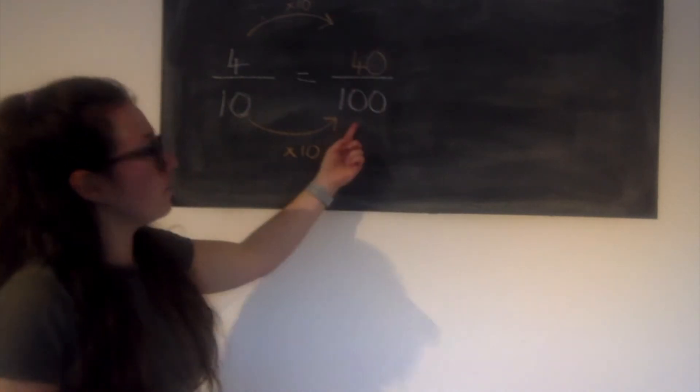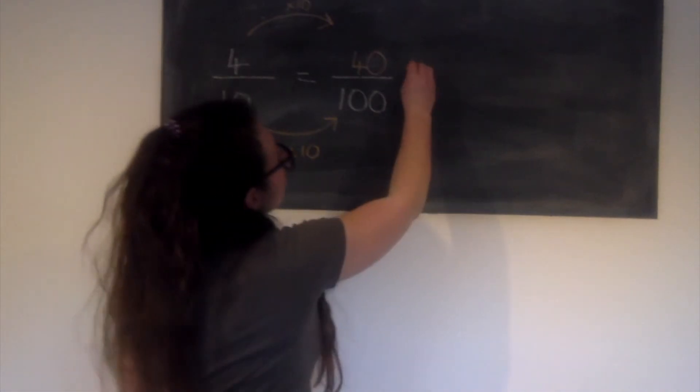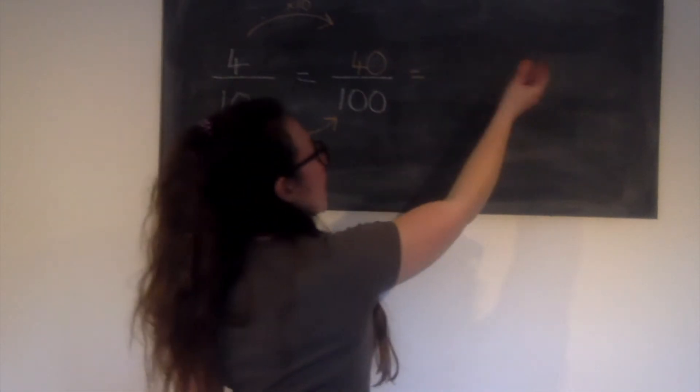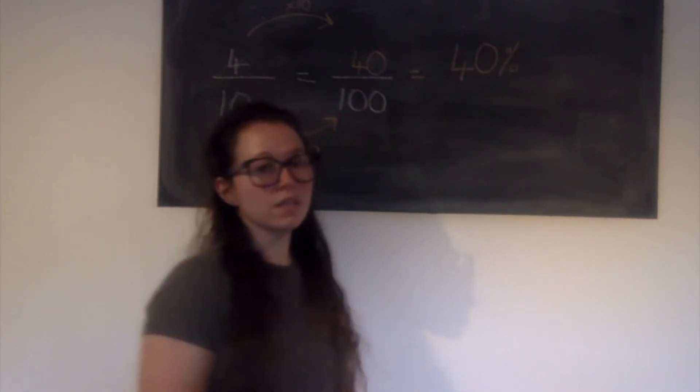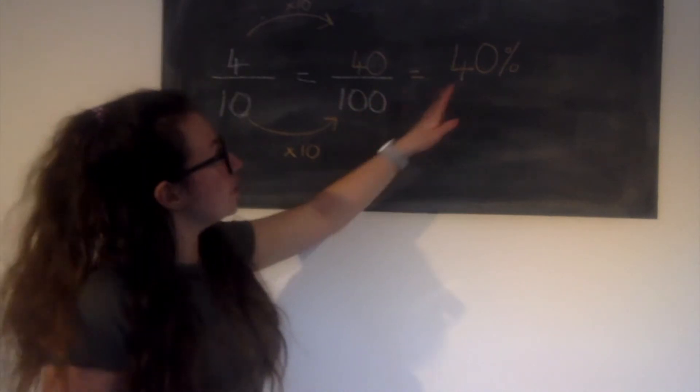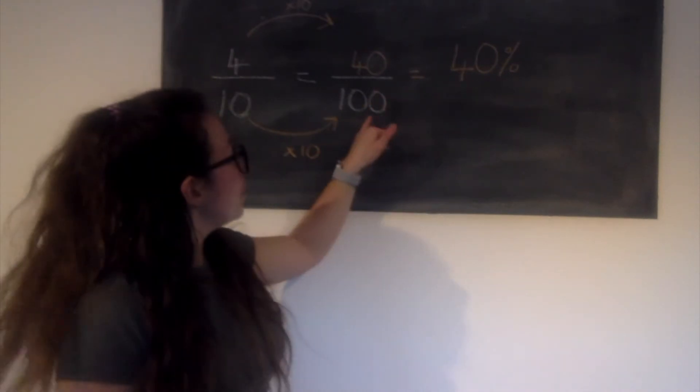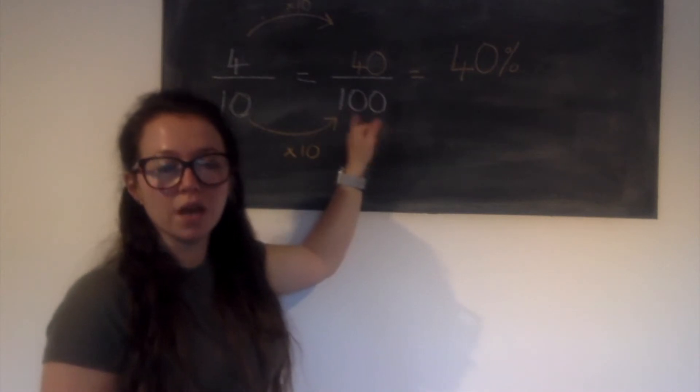I now have a fraction that's out of 100, so I can turn this nice and easily into a percentage. 40 hundredths or 40 out of 100 is equal to 40%. So the key learning today is that to turn a fraction into a percentage, it must be out of 100. So your fraction must have a denominator of 100.